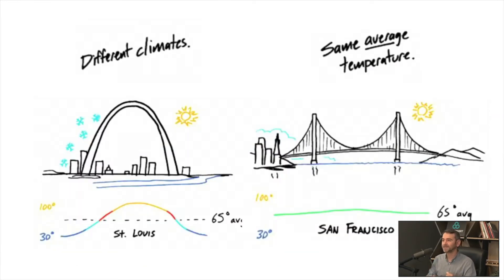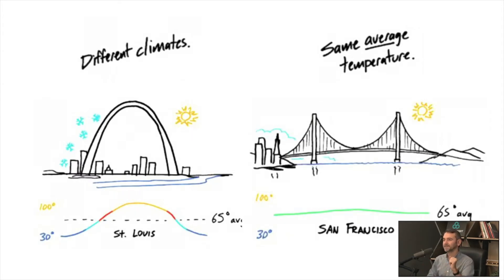The challenge with the NPS is that it's an average, and you know what the problem with the average is. If you look in this example, the average temperature in San Luis and in San Francisco is the same: 65 degrees Fahrenheit.